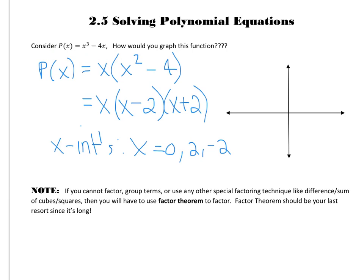We'll just sketch those really quickly on the graph. We'd have our negative 2, we'd have our 0, and we'd have our 2. And then we know it has a positive leading coefficient, so we know that it starts out going from quadrant 3 to quadrant 1, and they're all zeros of order 1, so it would just look like this.